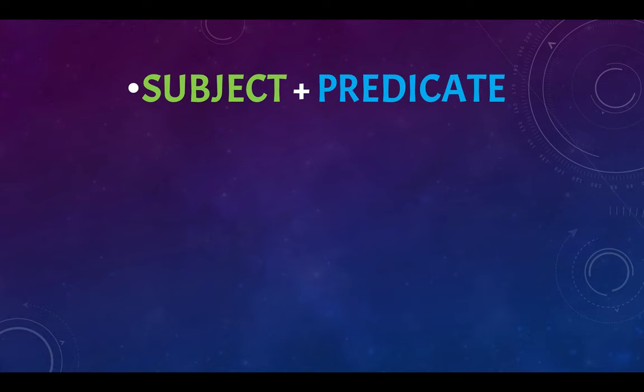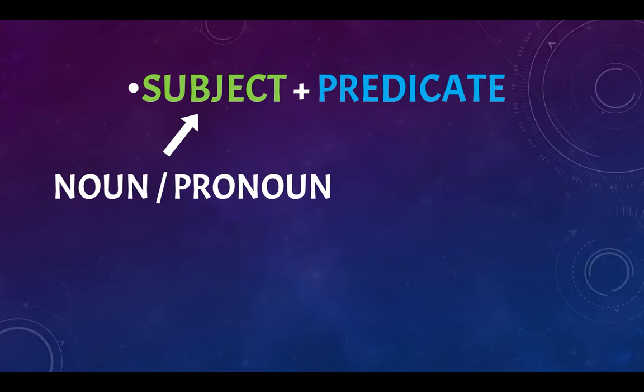So let's look at the subject plus predicate. Subject, what is it? We said it's a noun and a pronoun. A predicate is a verb plus something else, plus everything else after the verb.